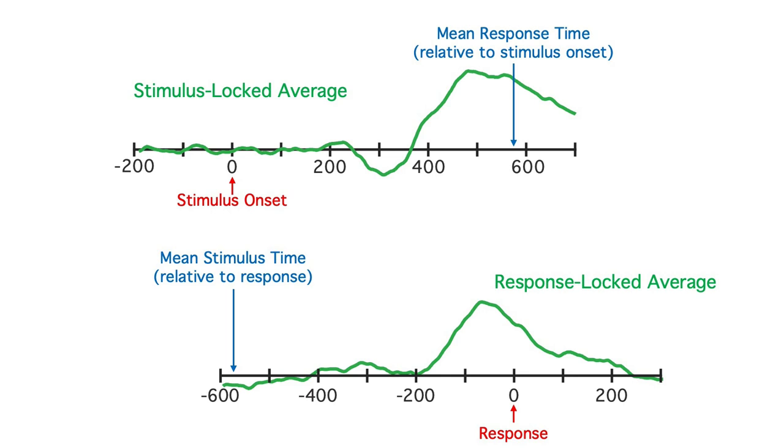However, there's a lot of trial-by-trial variability in response time. This variability smears out the response-related activity in the stimulus-locked average, and it smears out the stimulus-related activity in the response-locked average. So, it can be useful to look at both stimulus-locked and response-locked averages.